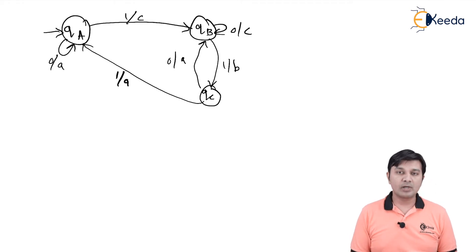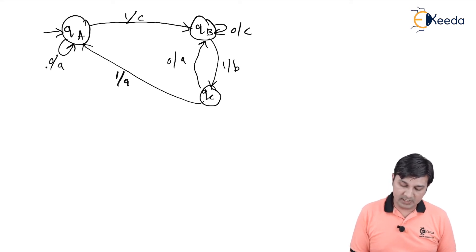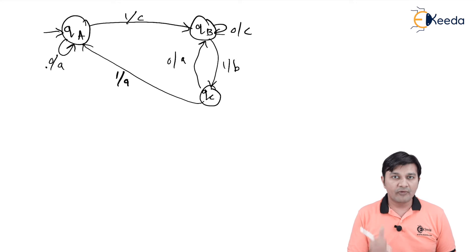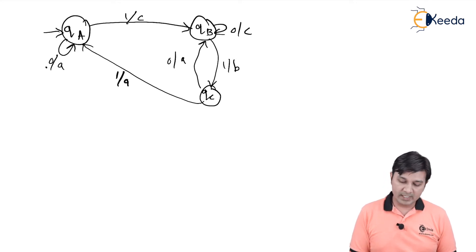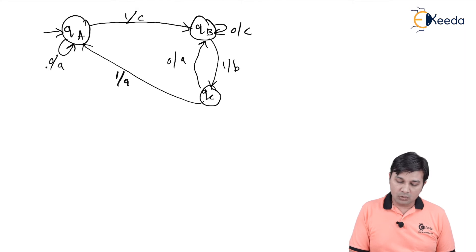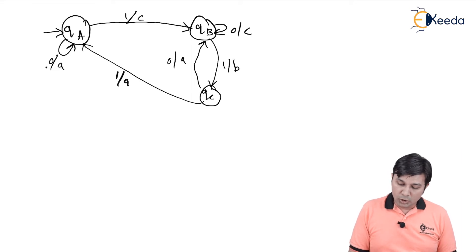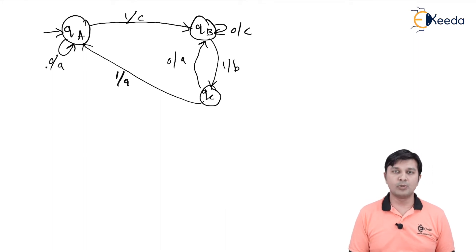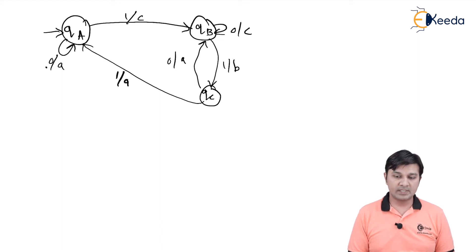Let us understand the working of the diagram. Qa on receiving input symbol 0 goes to Qa and throws output A. Qa on 1 goes to Qb and throws output C. Qc on 1 goes to Qa and throws output A. Qc on 0 goes to Qb and throws output A. That's how you read a Mealy machine.